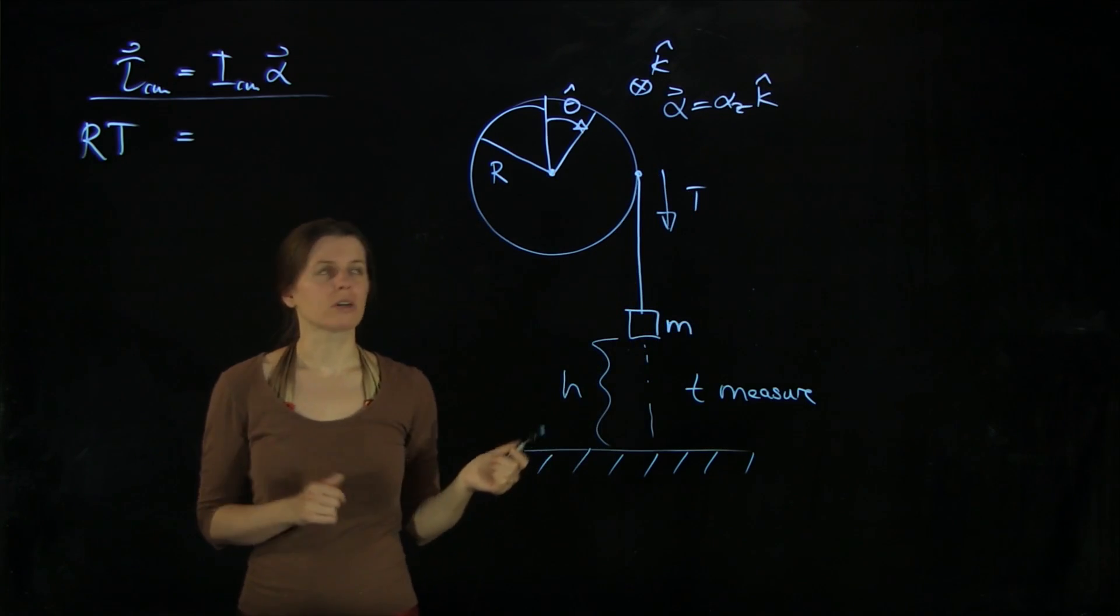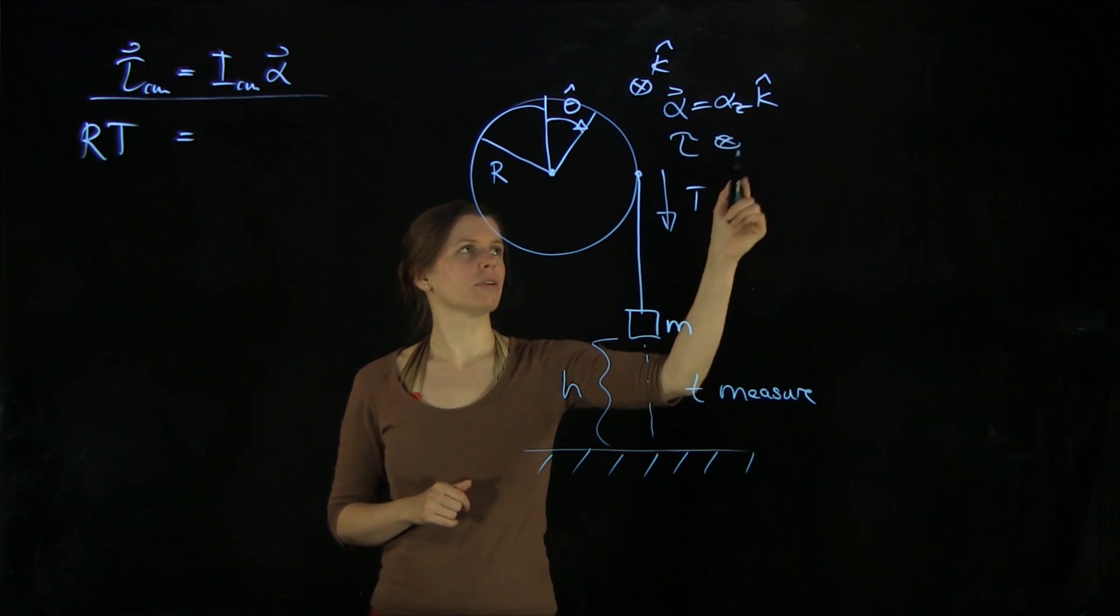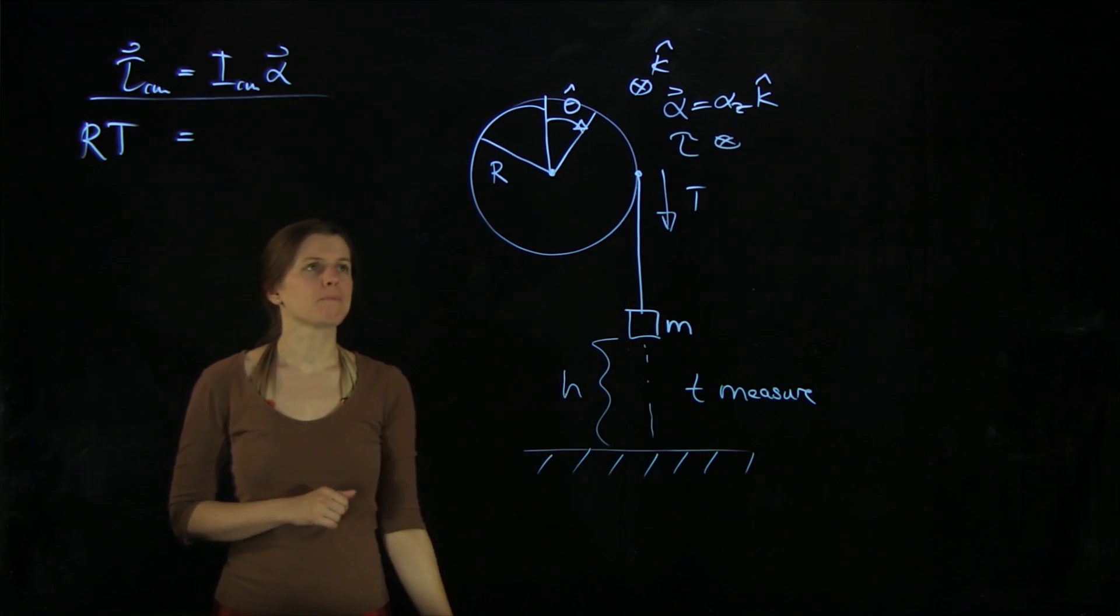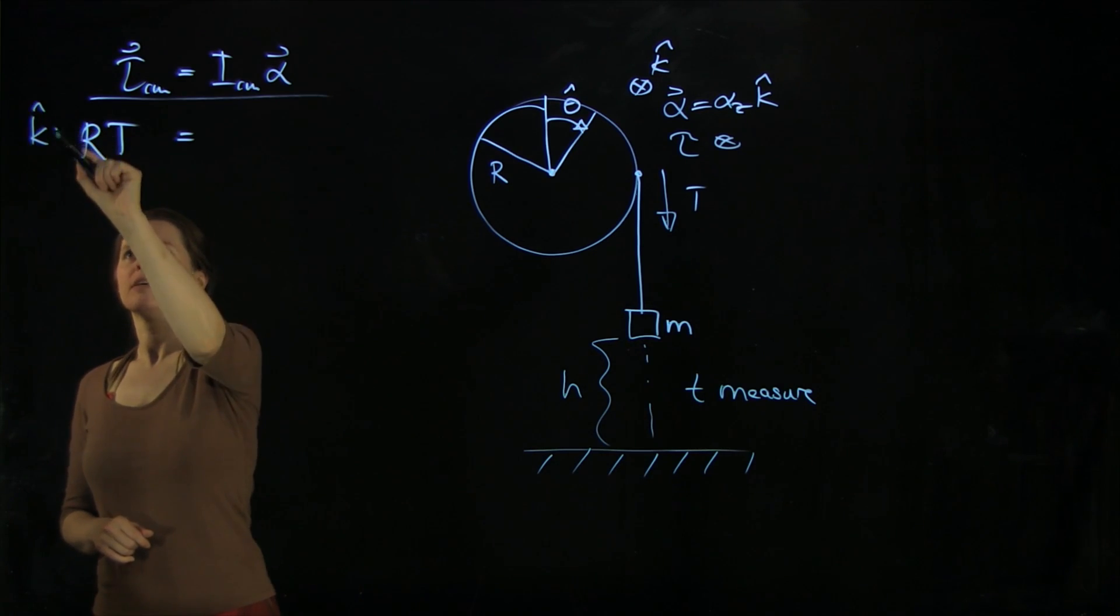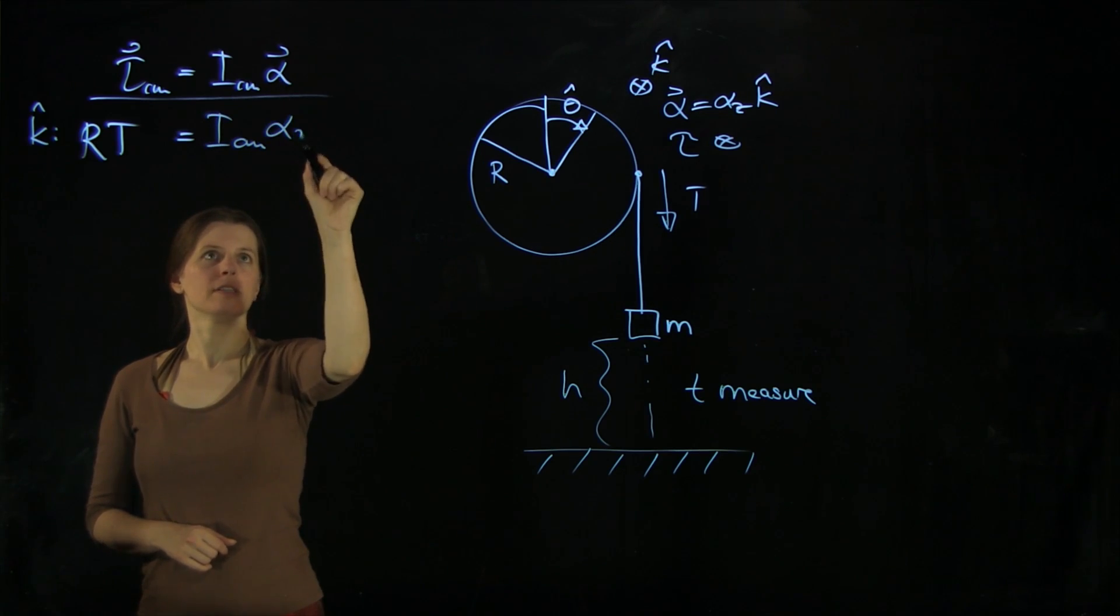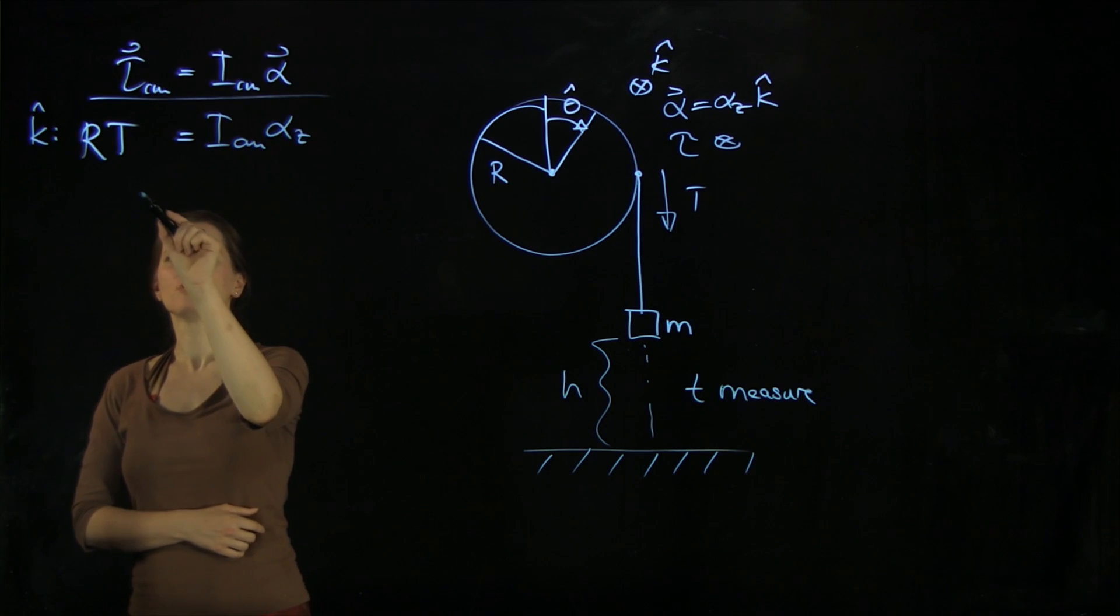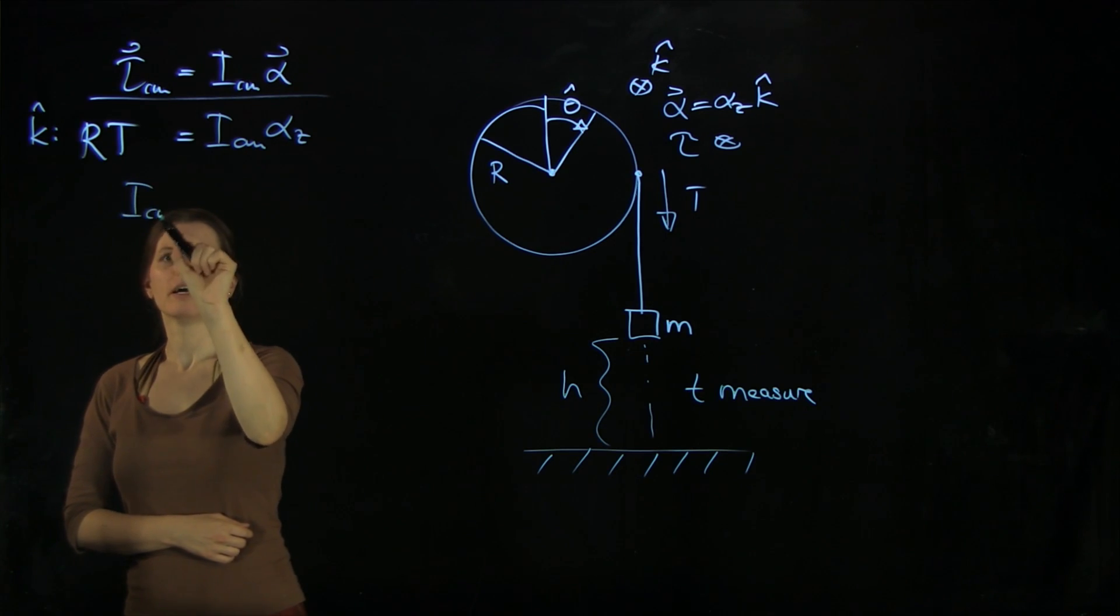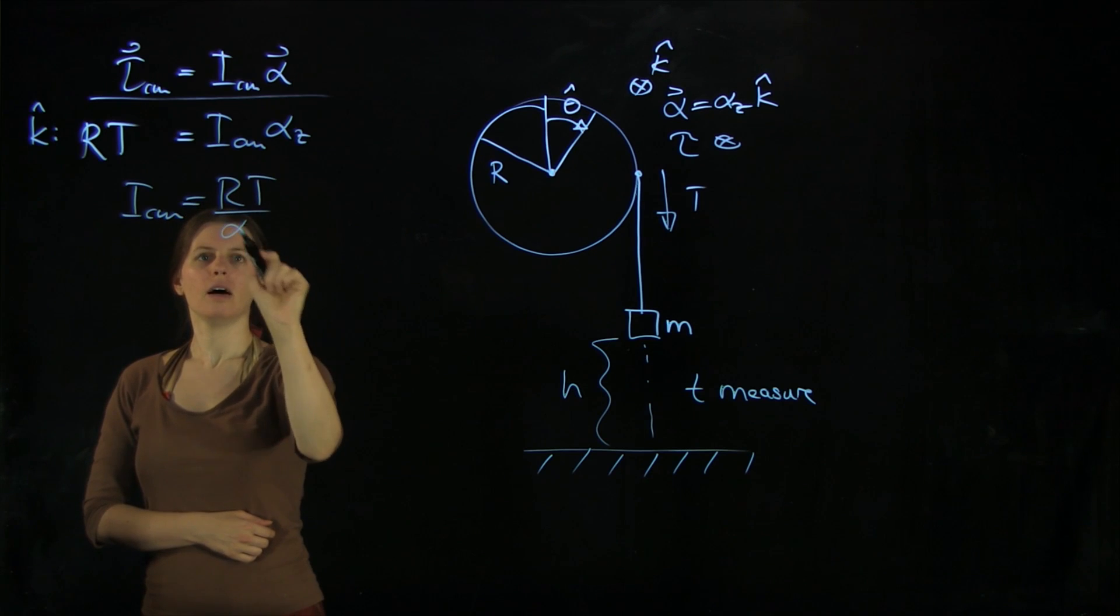And if that is the case, then our torque is going to follow suit. So torque also goes into the board. And so that means here, we're going to deal with k hat direction, and we're going to have I_cm, and then alpha z in the k hat direction. So we can solve this for I_cm = RT over alpha z.